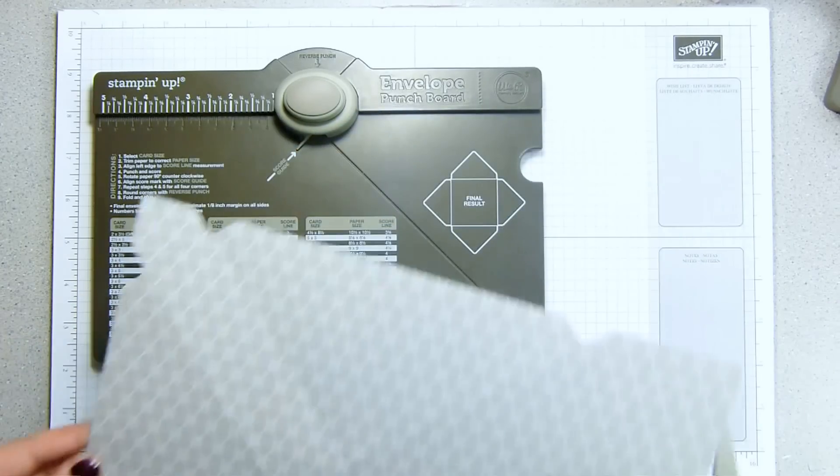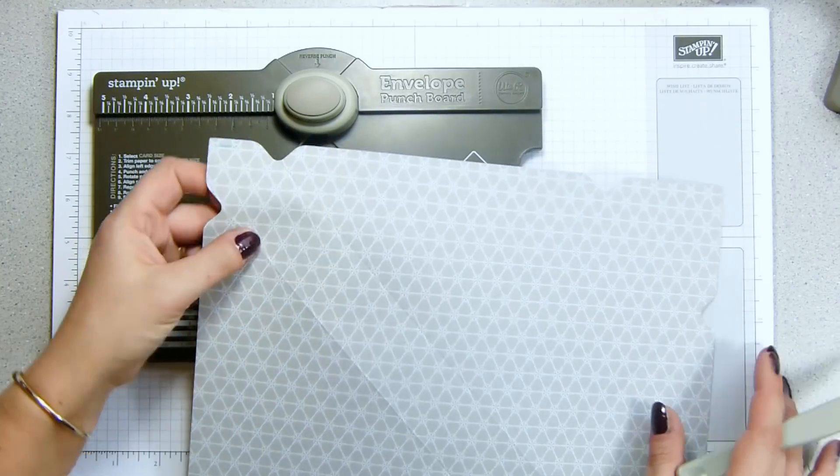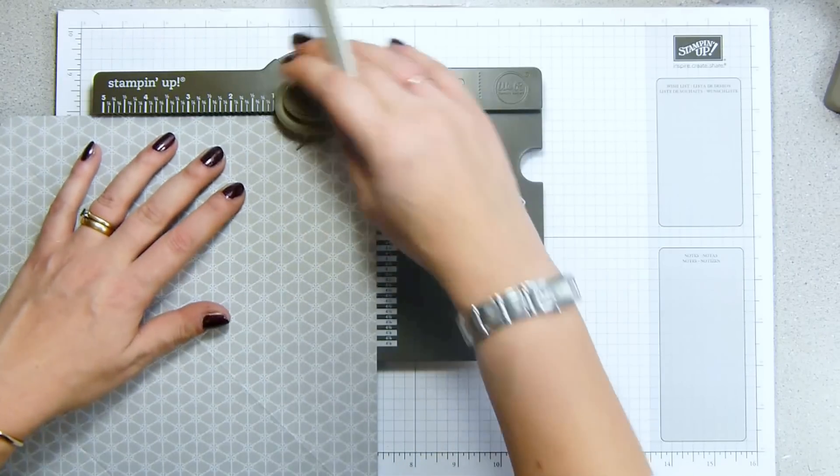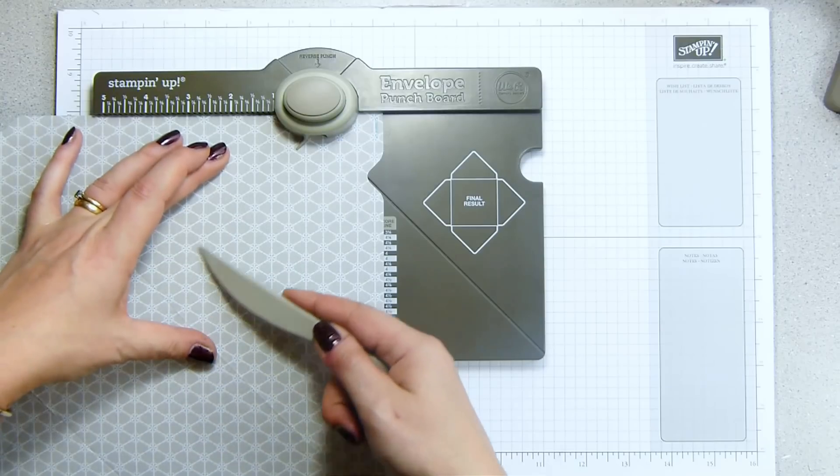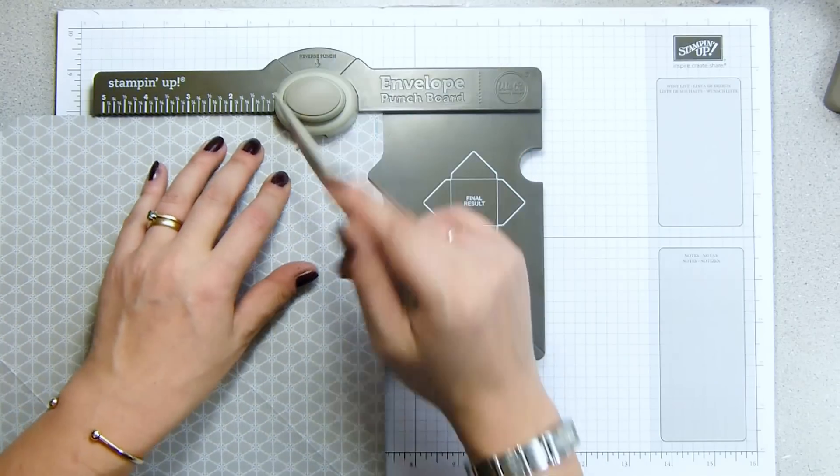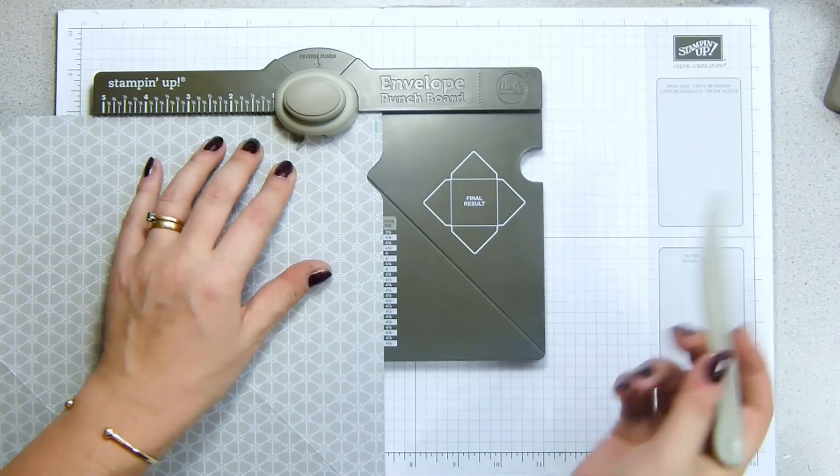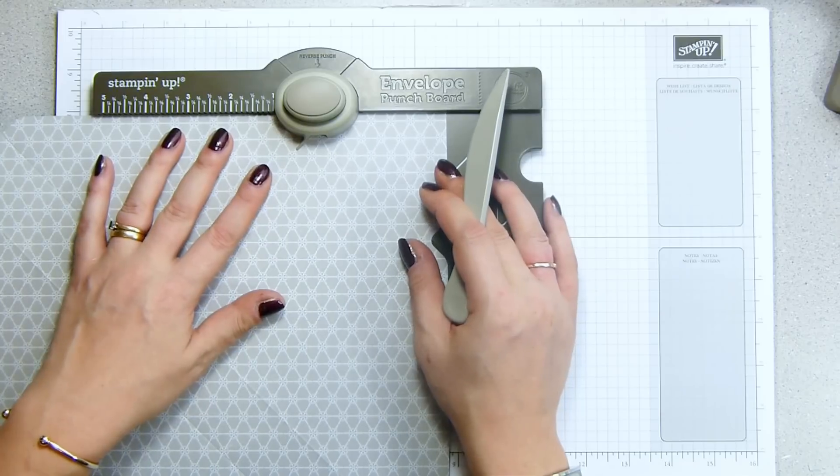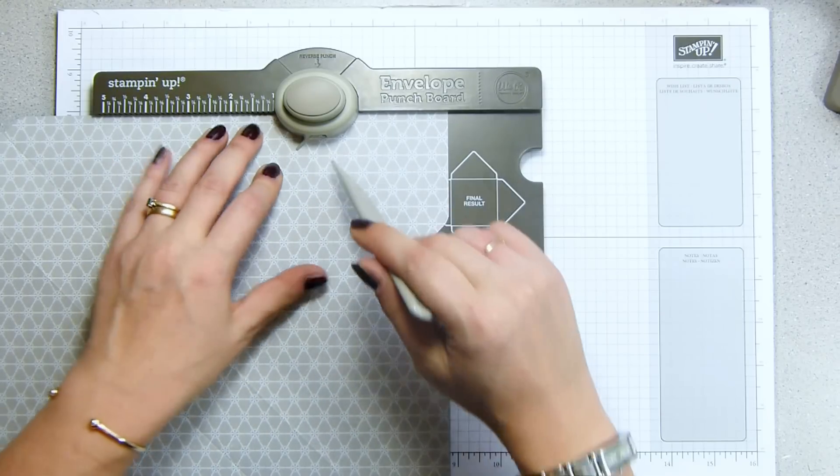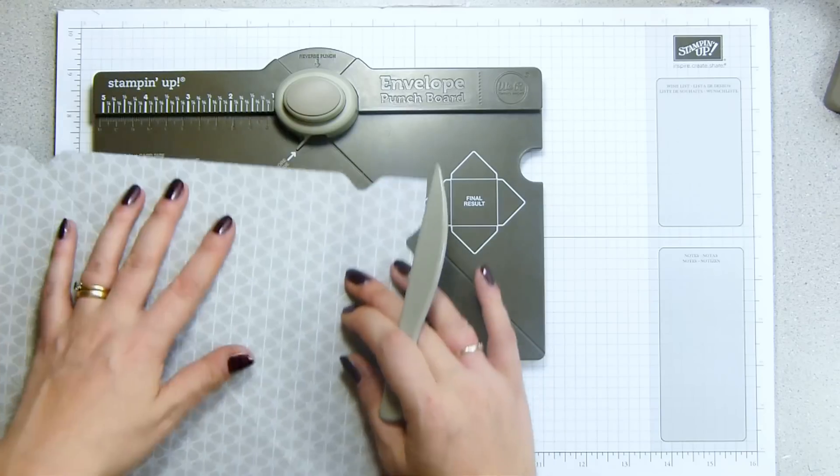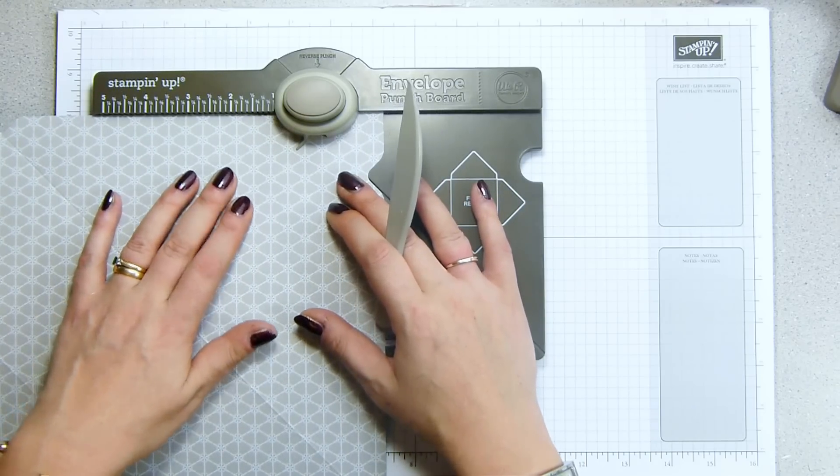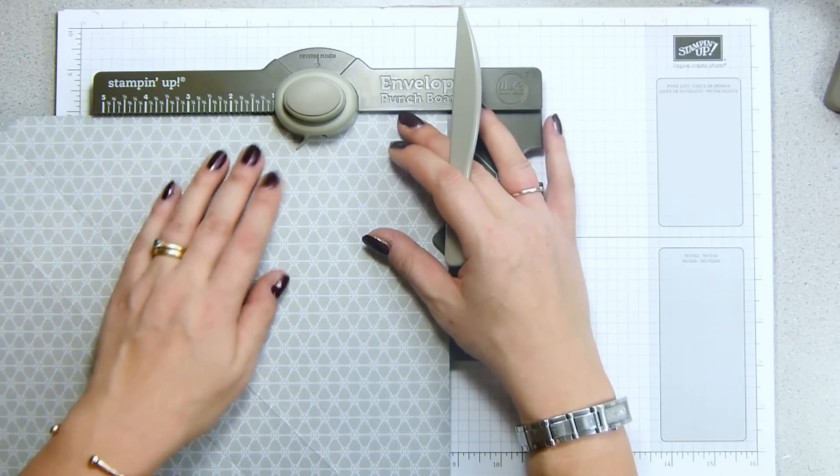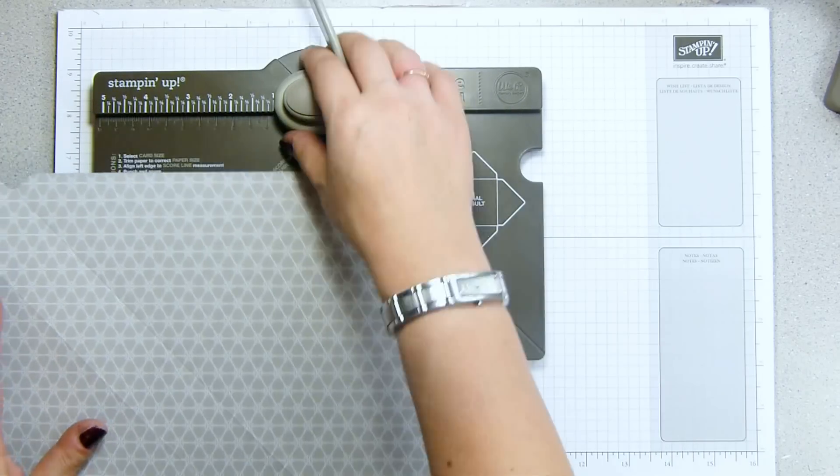I'm going to flip it back so you can see the score lines better. What I need to do now is join up all my little notches. So the simple way to do that is to line up your score line here. You've already punched, so it's just scoring, and keep rotating following this score line and scoring across. So that's the scoring done.